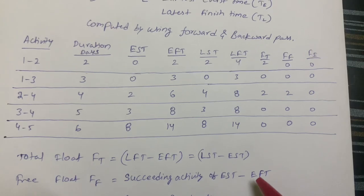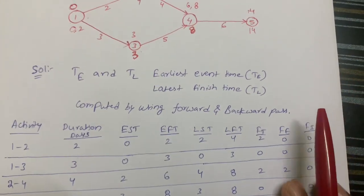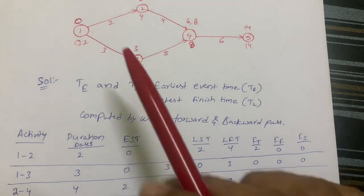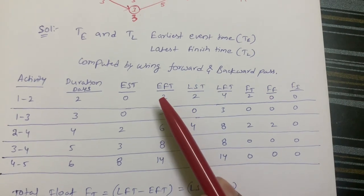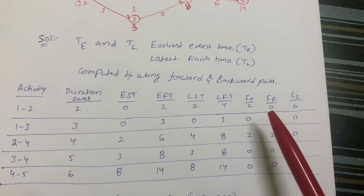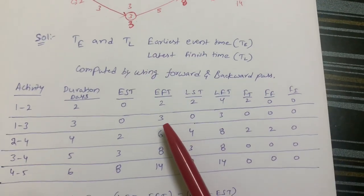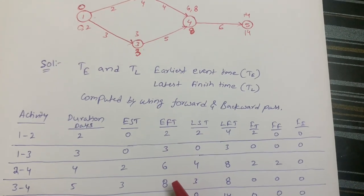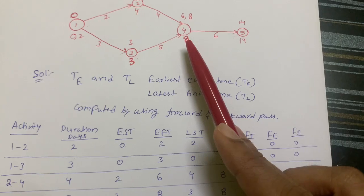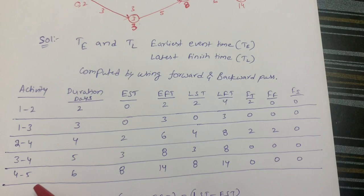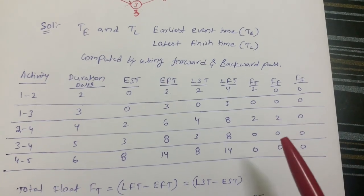Free float is calculated as: EST of succeeding activity − EFT of current activity. The succeeding event of 1-to-2 is event 2, so 2 − 2 = 0. For 1-to-3, succeeding event is 3, so 3 − 3 = 0. For 2-to-4, succeeding activity EST is 4 and EFT is 6, so 4 − 6 = ... wait, the value is 6 − 4 = 2. For 3-to-4, 8 − 8 = 0. For 4-to-5, 14 − 14 = 0.